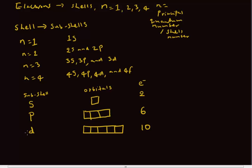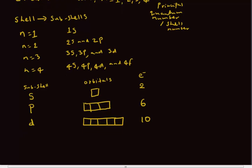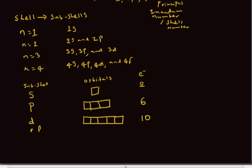Similarly, if I have my F subshell, my F subshell is actually divided into seven orbitals. One, two, three, four, five, six, seven. So seven times two, that's 14 electrons.